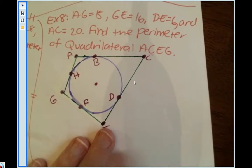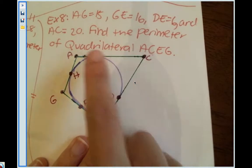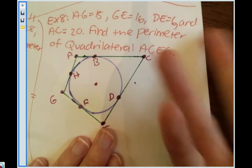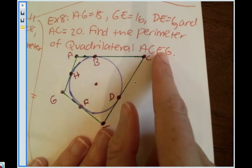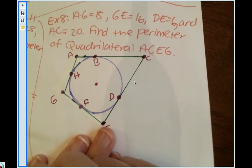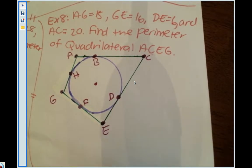We're still using the same property which states that if two tangent segments intersect in the same external point, then that means the segments have to be congruent. So let's get going.